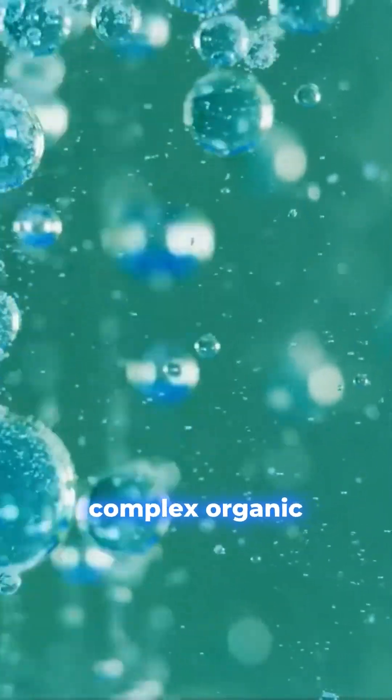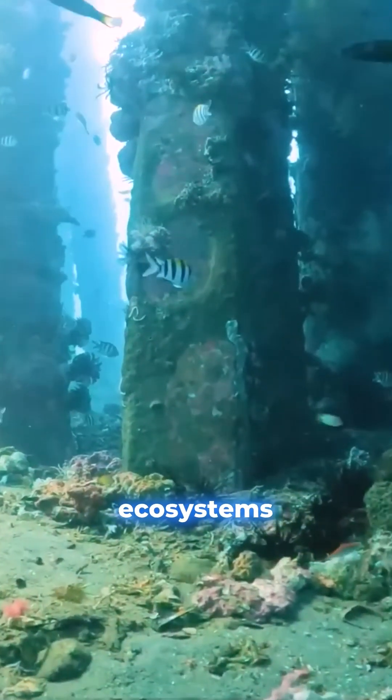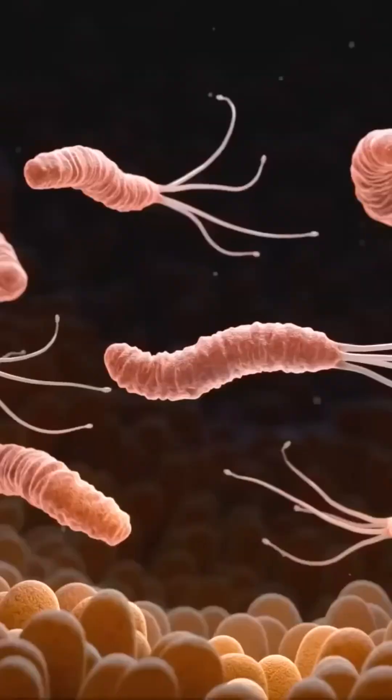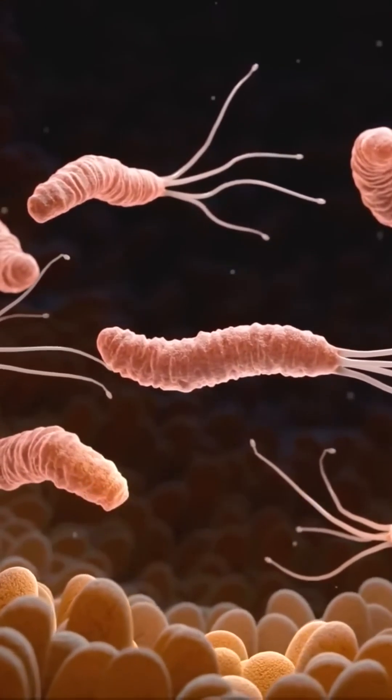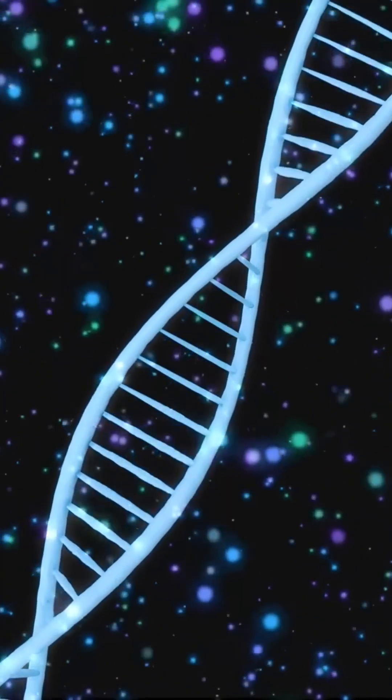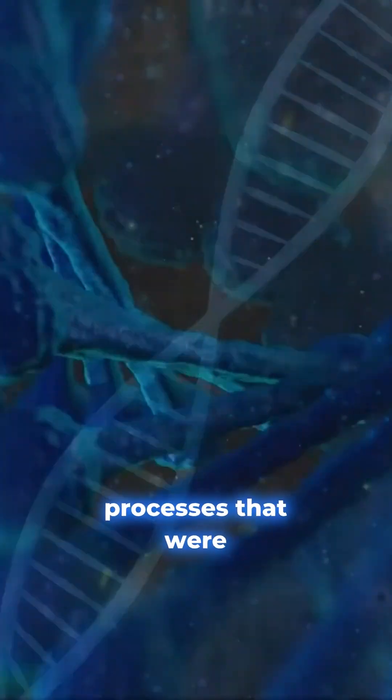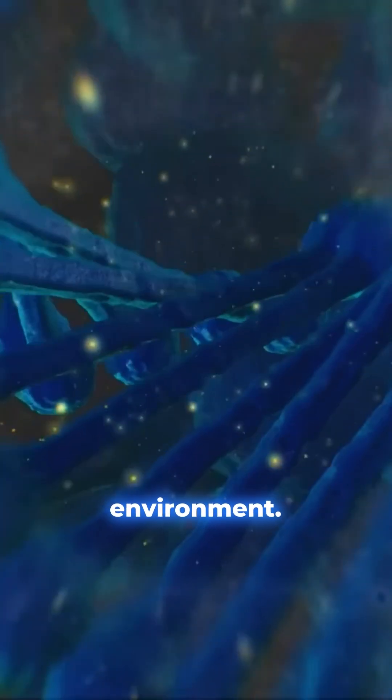The formation of complex organic molecules and the development of life-supporting ecosystems required a finely tuned environment. From single-celled organisms to complex multicellular life, the evolution of life involved genetic mutations and natural selection, processes that were only possible in a finely balanced environment.